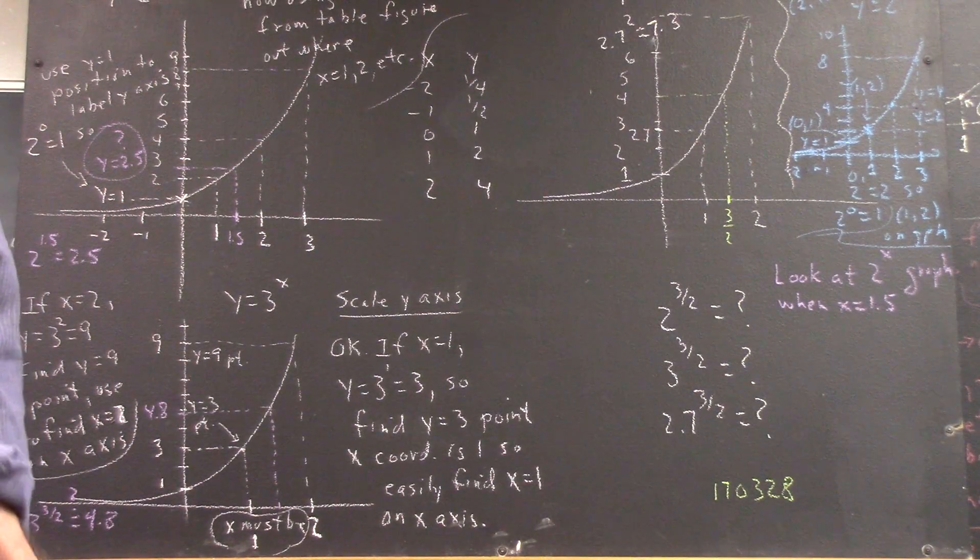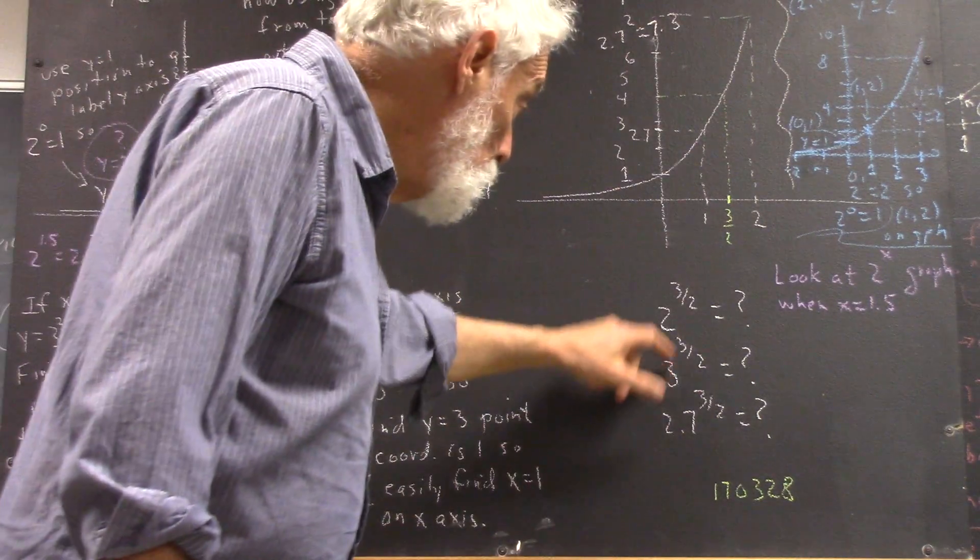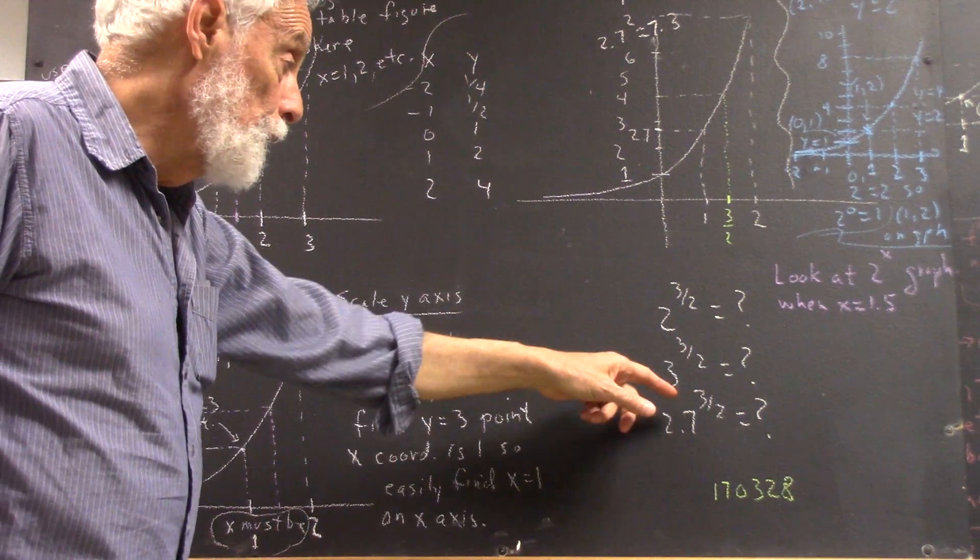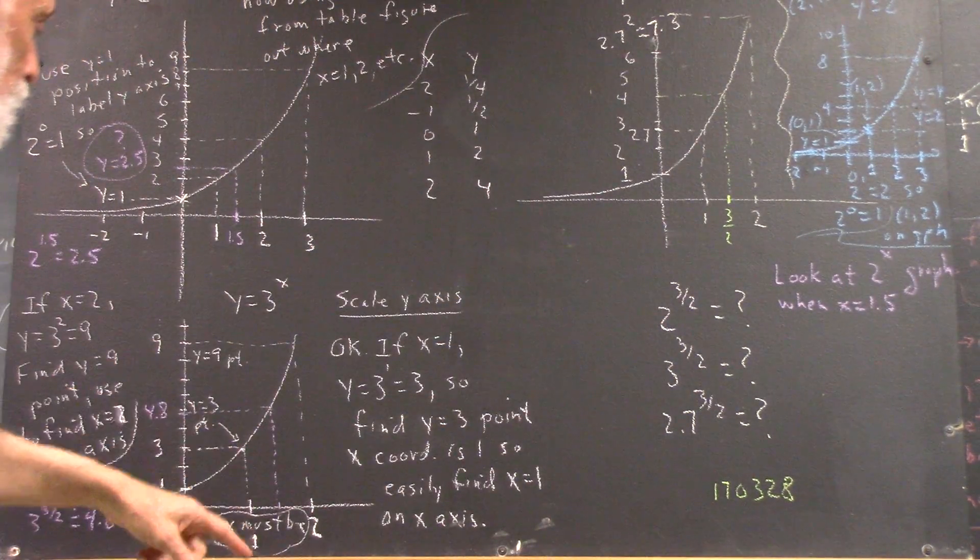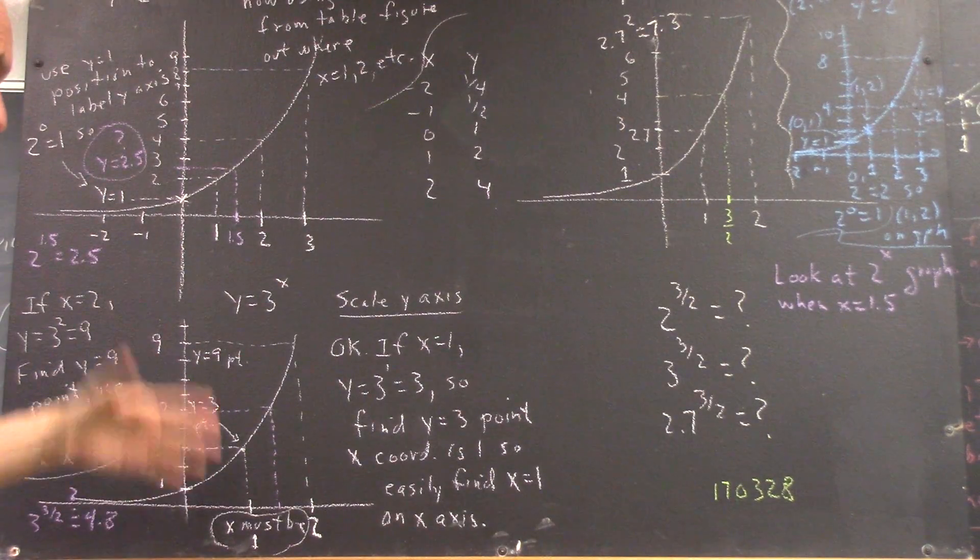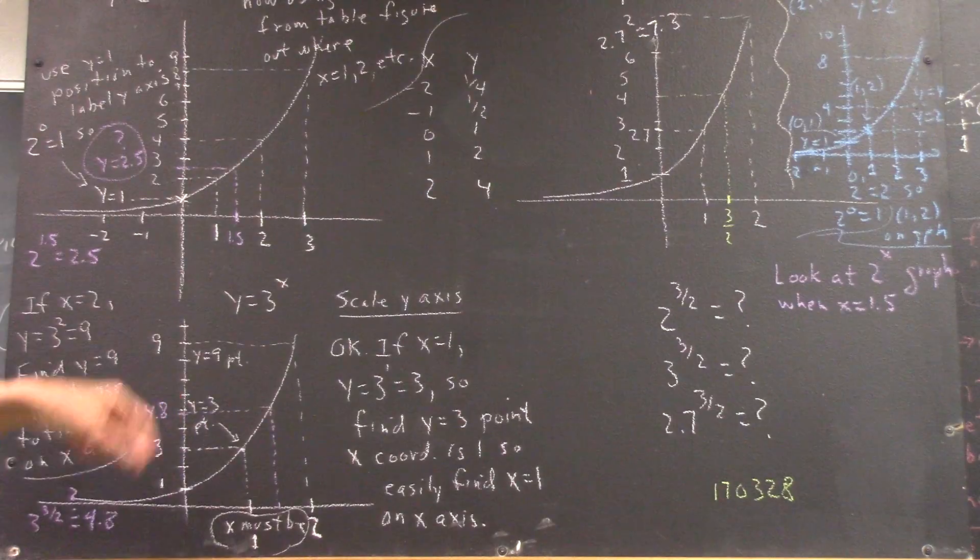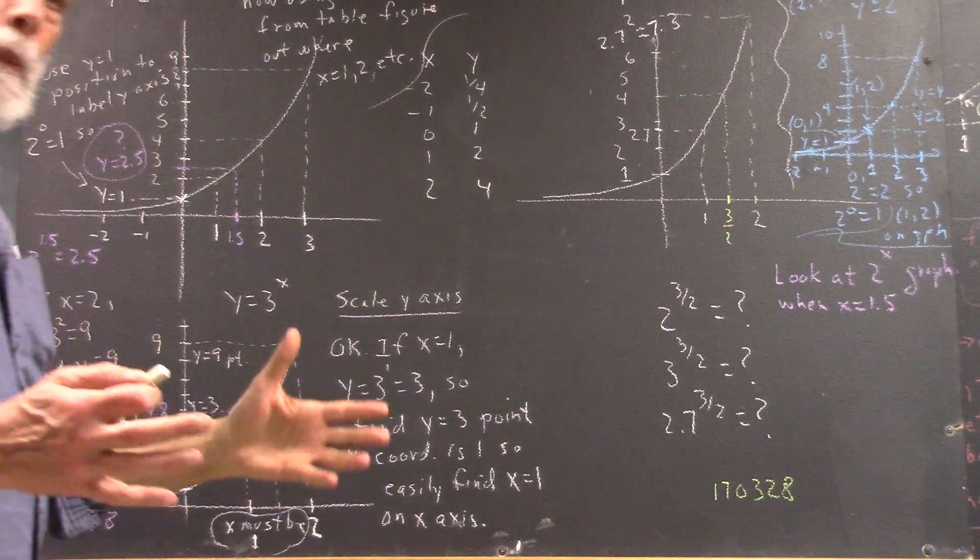So to find 3 to the 3 halves, we just find where x equals 3 halves, not 3, 3 halves. Where x equals 3 halves, the y coordinate should be 3 to the 3 halves. It should be a reasonable approximation. So I think I got myself halfway. That actually looks pretty good. I projected over.